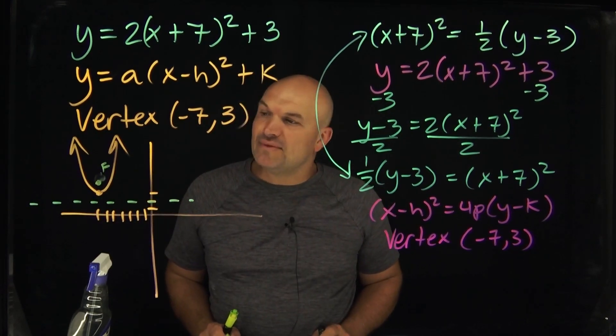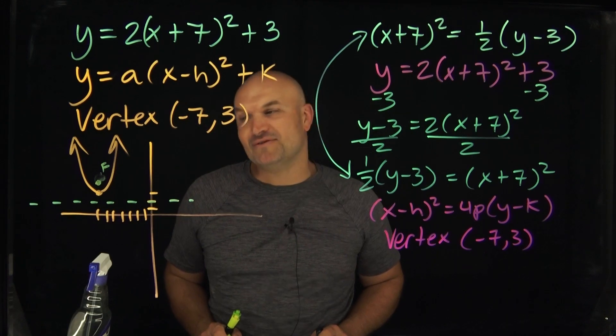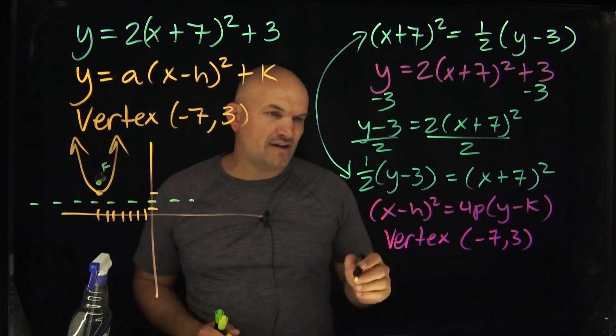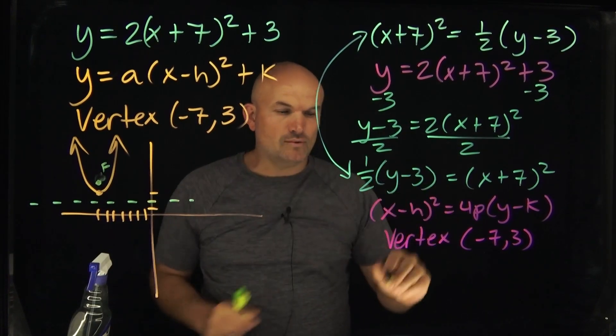Now, how do you find that distance from the vertex to the focus, as well as distance from the vertex to the directrix? That is going to be your value p, ladies and gentlemen. And in this case, we can find our value p by just setting 4p equal to 1 half.